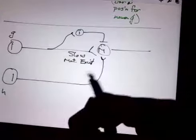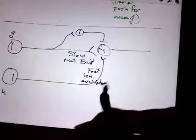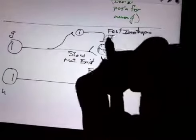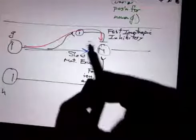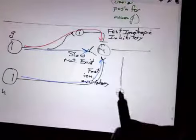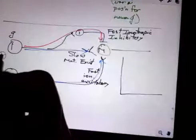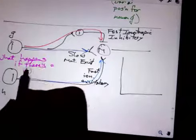So here's the same circuit I drew before. We have a fast ionotropic excitatory from H, fast ionotropic inhibitory from I, and a slow metabotropic excitatory from G. So here's the inhibitory circuit, the slow metabotropic and the fast ionotropic. So what that gives us is going to depend upon whether that bar stays at G or whether it's first at G and then at H.